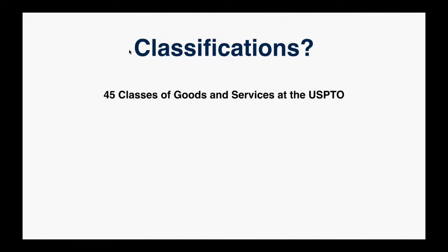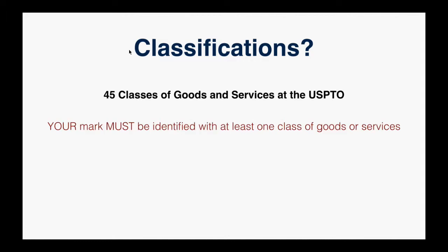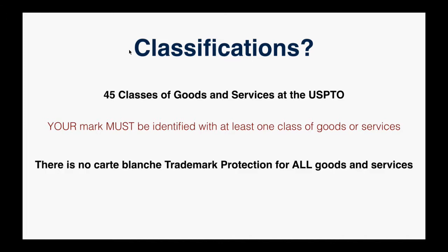At the Patent and Trademark Office — and this is the same in almost every trademark office around the world — there are 45 classes of goods and services. Whenever you file for your trademark, you have to identify your mark with at least one of those classes. There's no blanket trademark protection for all goods and services. If you wanted protection in all 45 classes you'd have to file for all 45, and your fees go up for every class. You still have to show that you're selling goods or services in those classes.